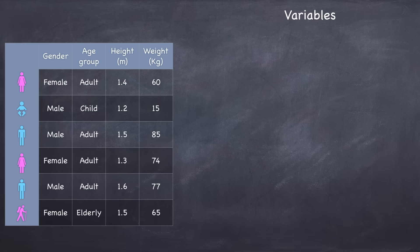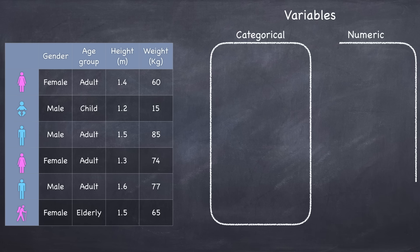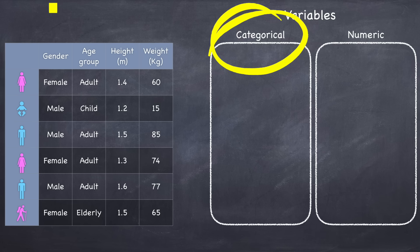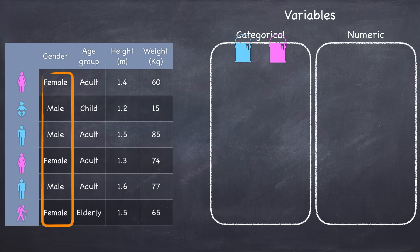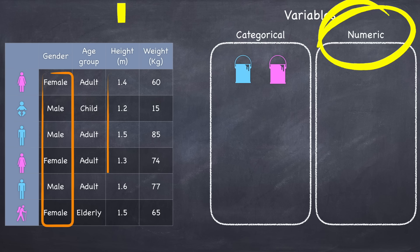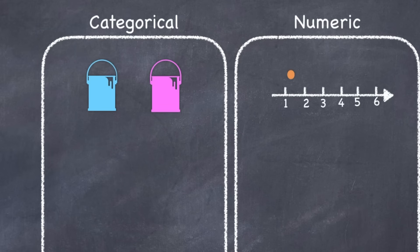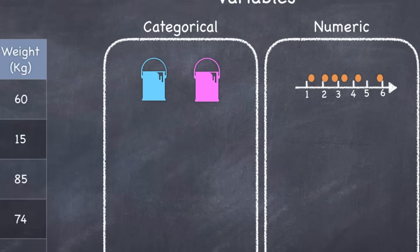Most data sets that you work with will contain two types of variables: categorical and numeric variables. Categorical variables, like gender, contain categories — think of them as groups or buckets that the data can be arranged into, in this case males and females. Numeric variables, like height, are numbers and can be arranged on a number line.